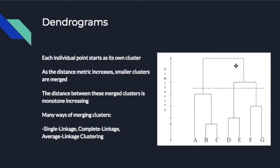This is a little bit more about the basics of dendrograms. It's important to know that as we're calculating and moving up, we're going to be running different algorithms called single linkage, complete linkage, average linkage, and centroid linkage, and they all can form dendrograms in this way. There is a distance metric which we'll get into later, and that's how the clusters end up merging up the tree.